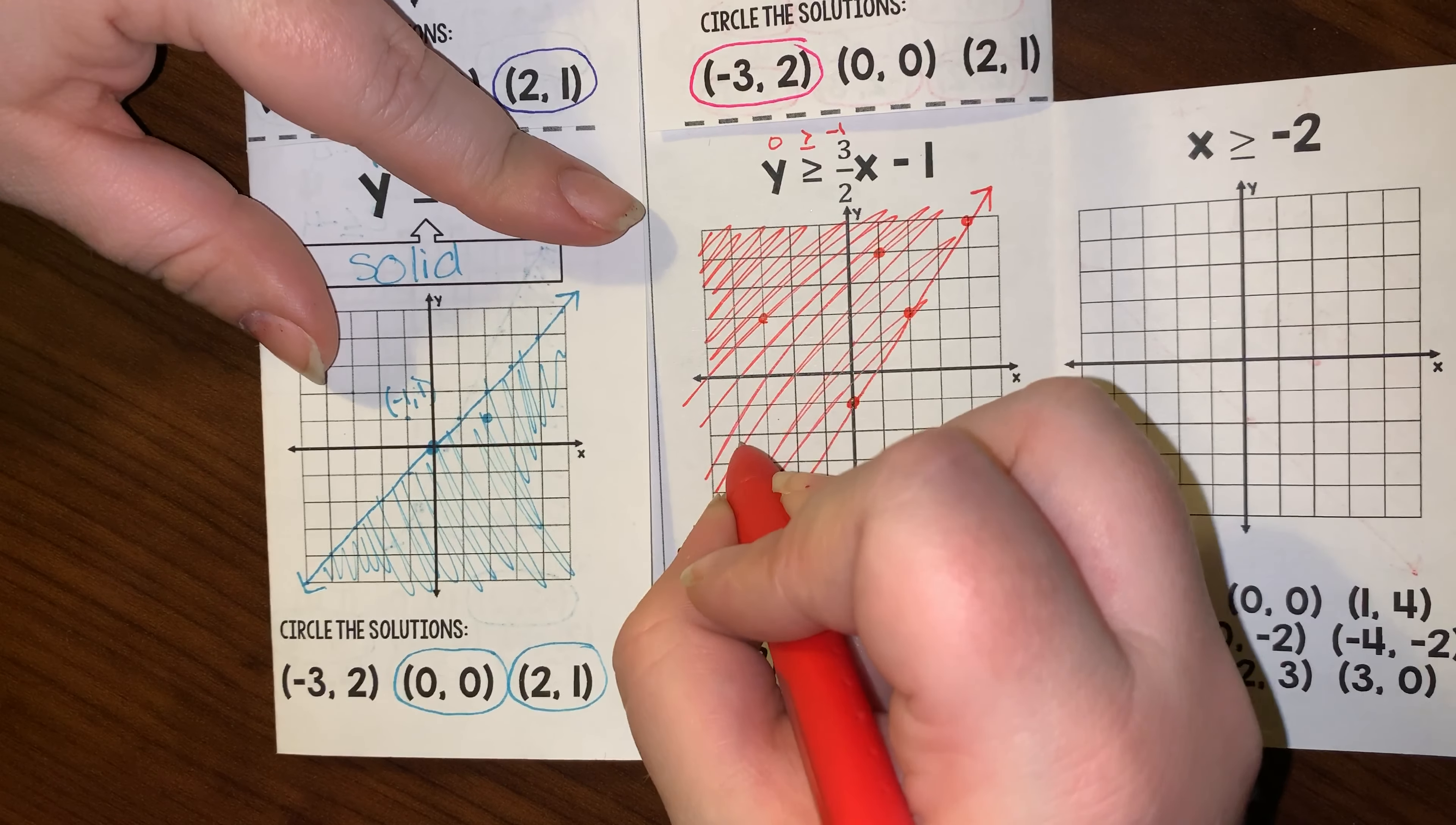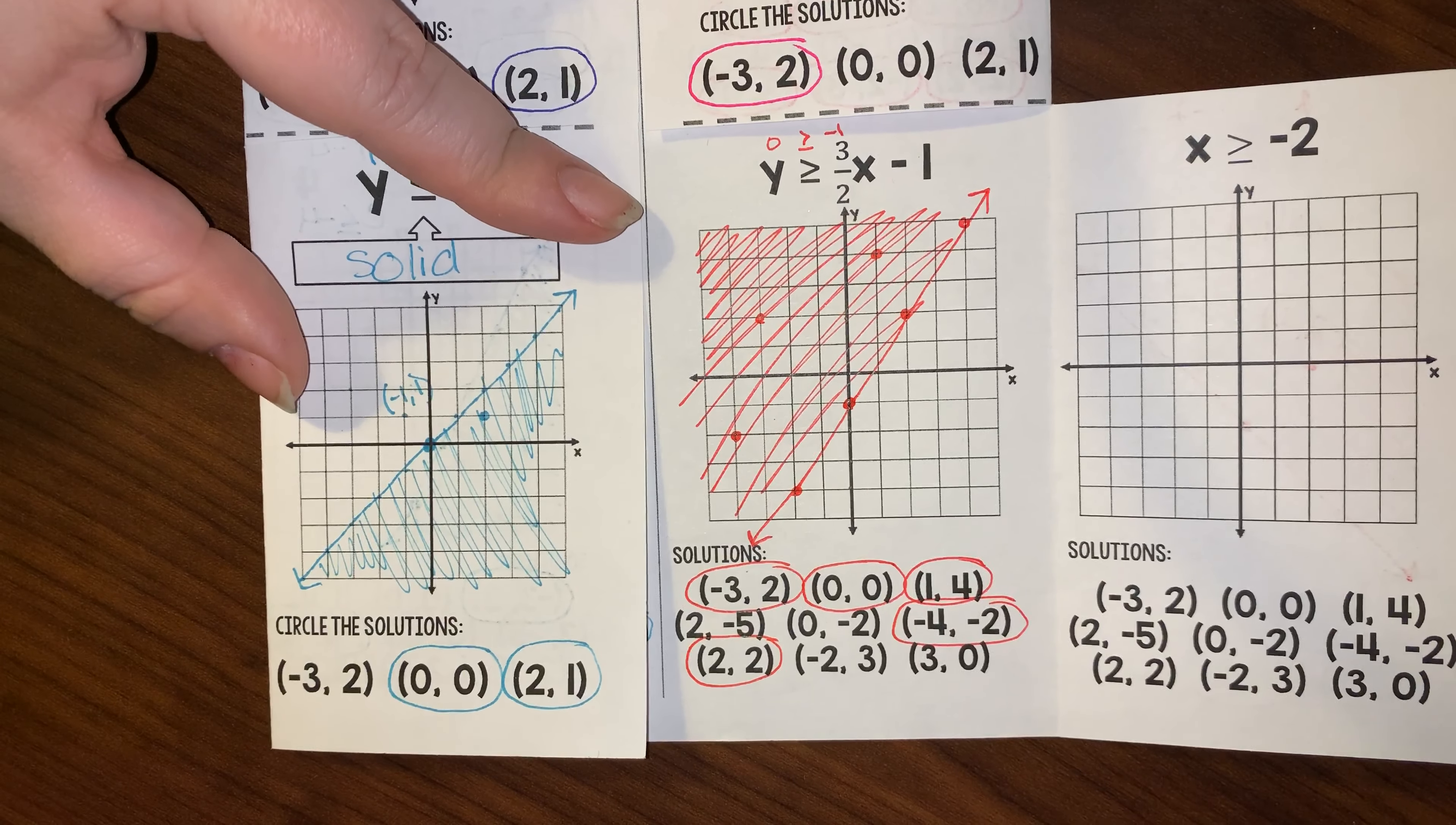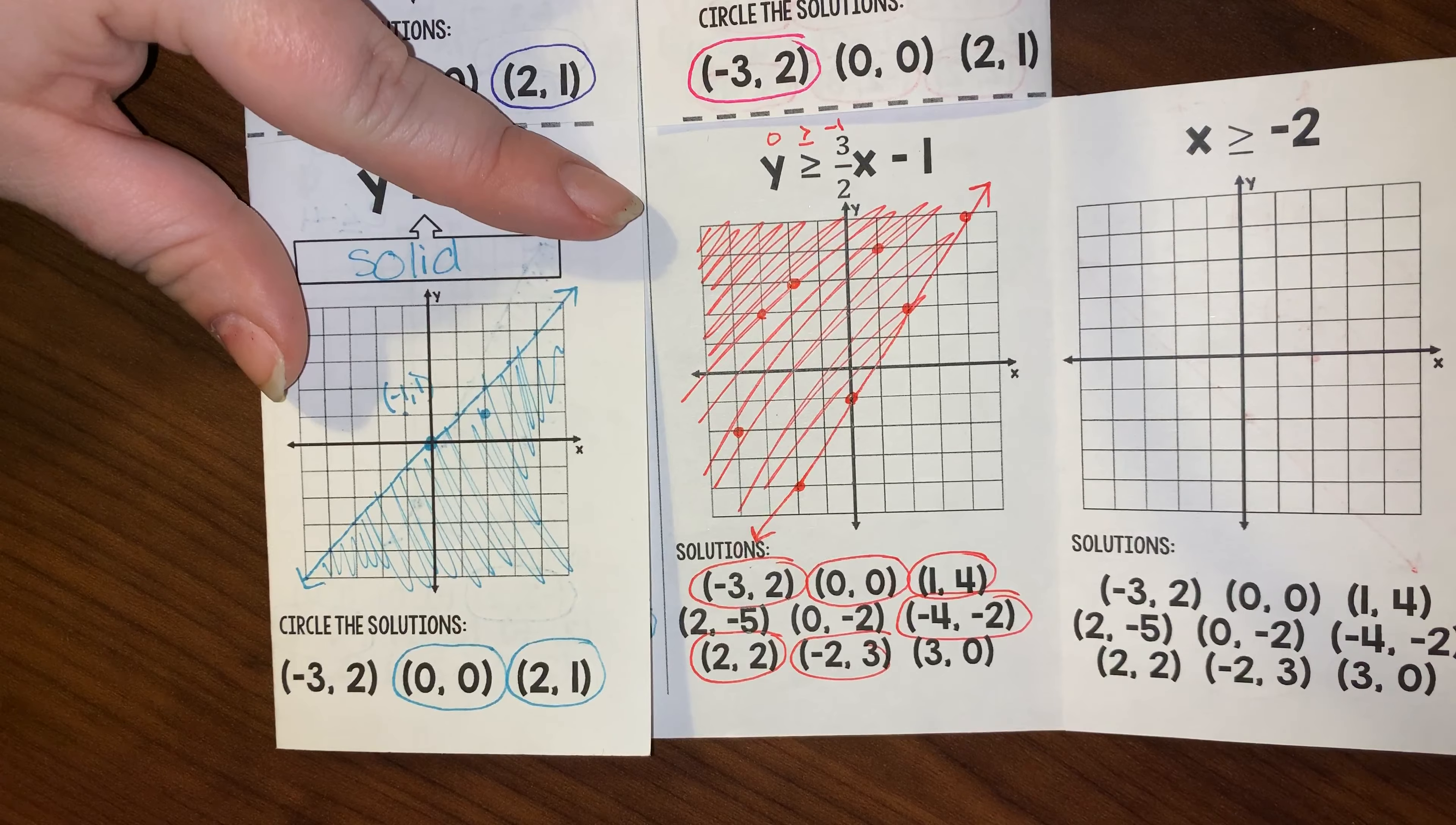Negative 4, negative 2 does work. 2, 2 is on the line, and because it's a solid line, it is a possible solution. Negative 2, positive 3 works. And 3, 0 is not within the shaded region, so it is not a solution.